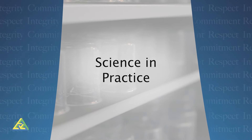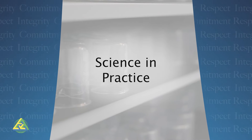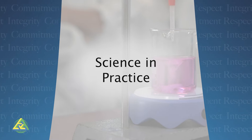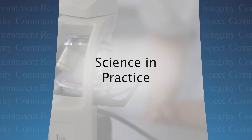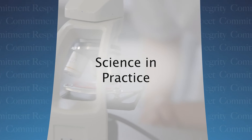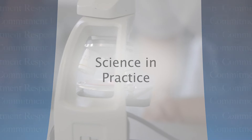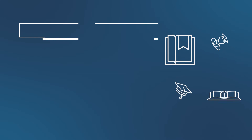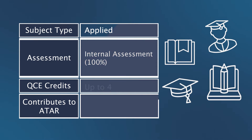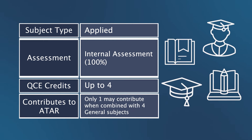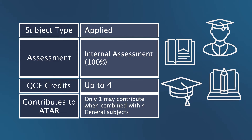Science in Practice develops critical thinking skills through the evaluation of claims using systematic reasoning and an enhanced scientific understanding of the natural and physical world. Science in Practice is an applied subject consisting of four units that are completed over Year 11 and 12. The successful completion of all Science in Practice units provides up to four core credits towards a student's QCE.